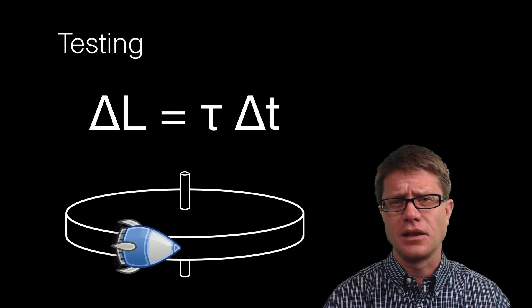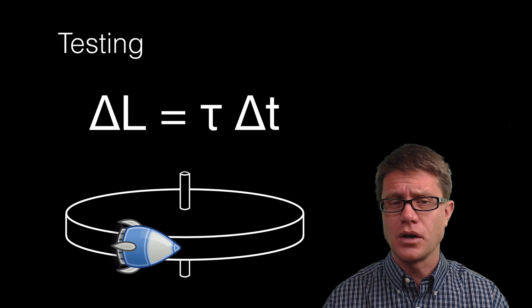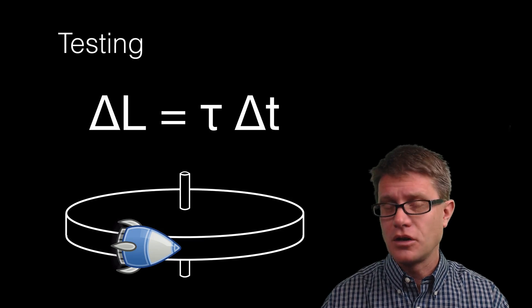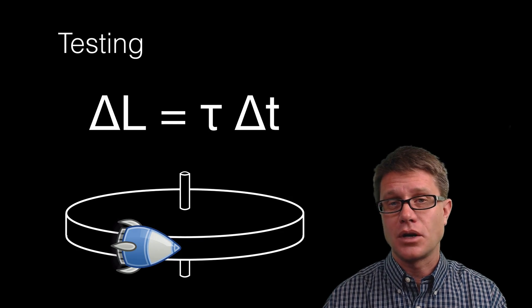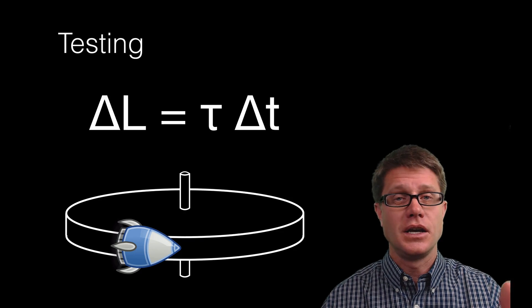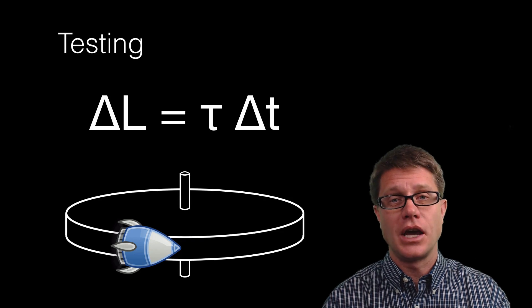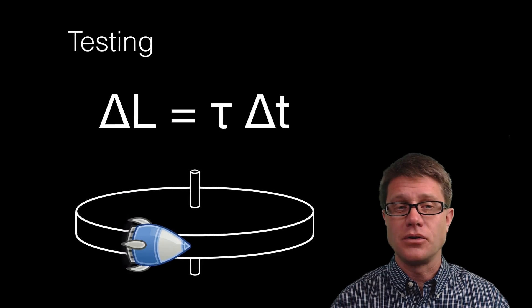Now how could you test this in the laboratory and make sure that this equation works? Well it would be nice if we had a large spinning disk. We could apply a force on one side, maybe a rocket. So we could apply a torque to it for a given period of time and watch its change in angular momentum. It is difficult to do that.